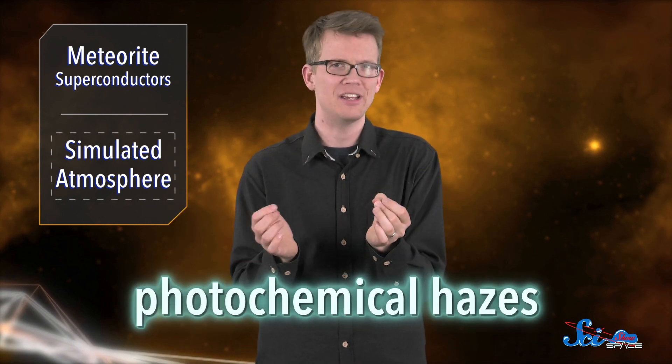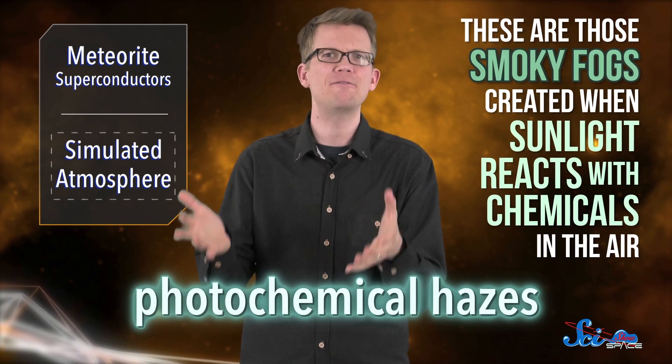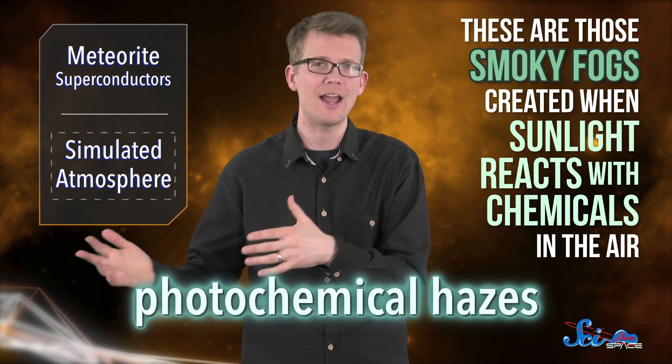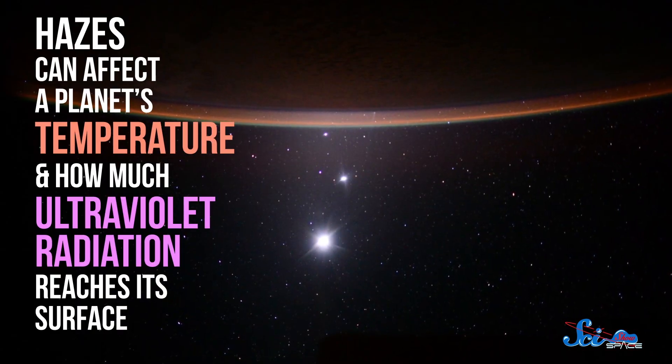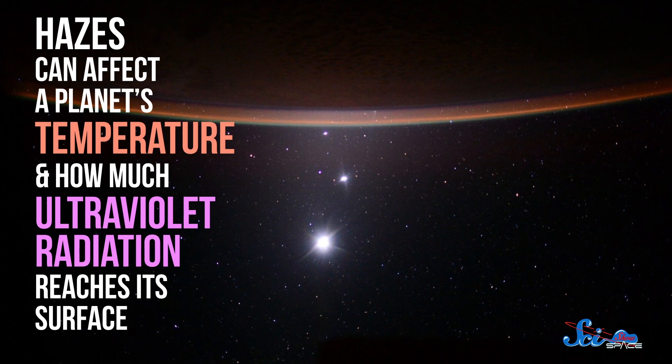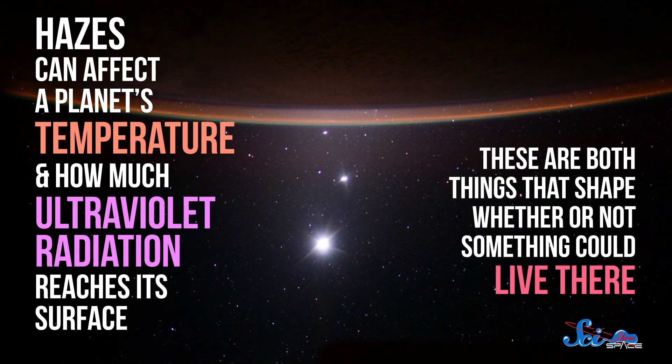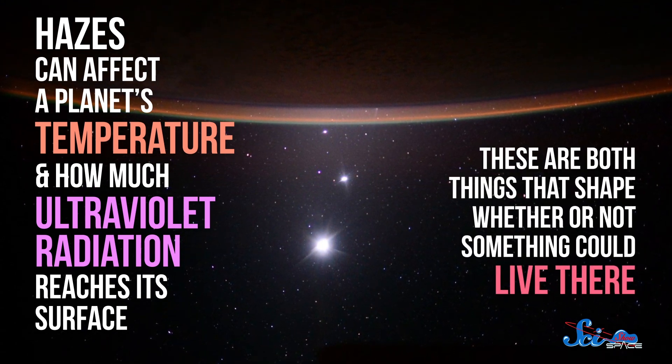Last week in the journal Nature Astronomy, a team of scientists based at Johns Hopkins University published a paper about their new atmosphere simulations. And they're going to really help out our telescope game. Specifically, this team wanted to see which kinds of atmospheres develop photochemical hazes. These are those sort of smoky fogs created when sunlight reacts with chemicals in the air. Hazes can affect a planet's temperature and how much ultraviolet radiation reaches its surface. And these are both things that shape whether or not something could live there.